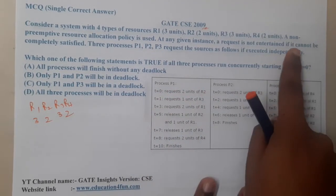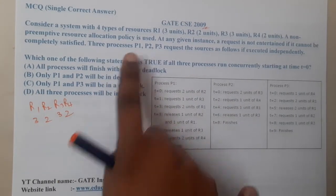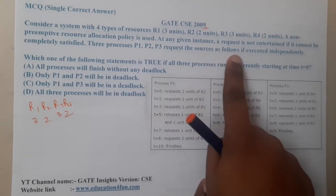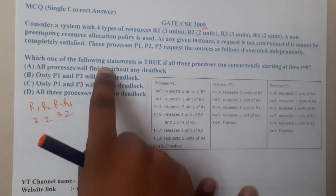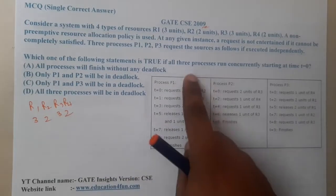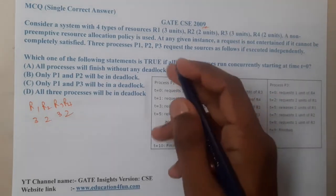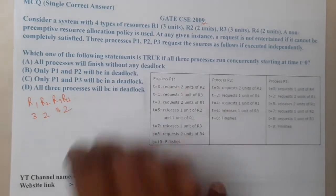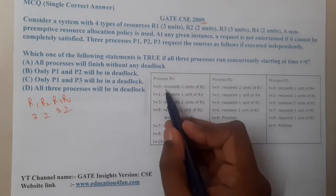A request will be entertained only if all required resources are available. There are three processes P1, P2, and P3. The question asks: if all three processes run concurrently starting at time zero, which of the following statements is true?